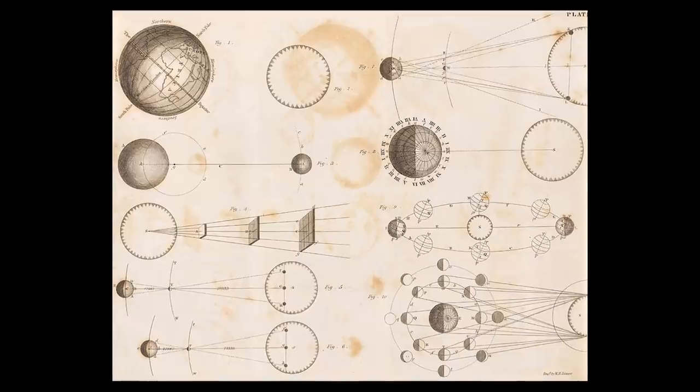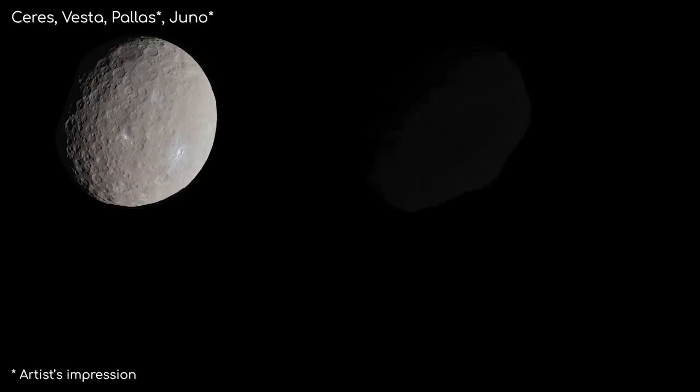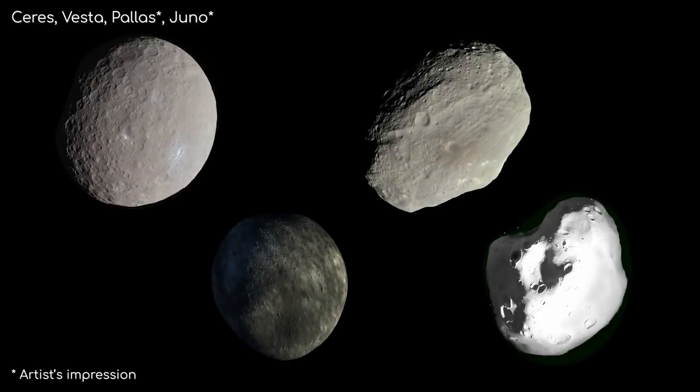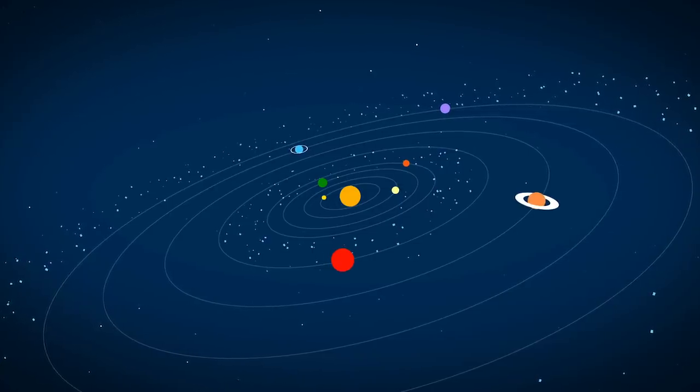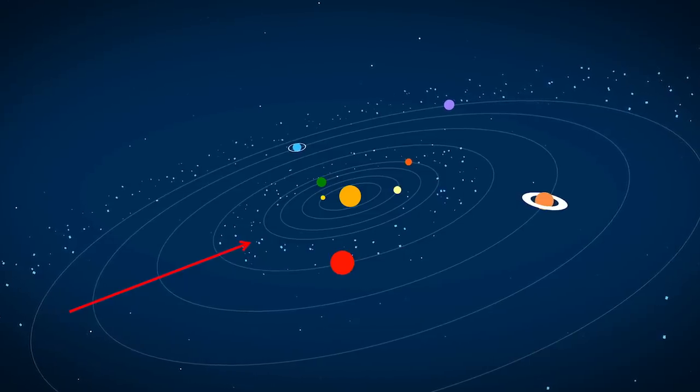After this discovery, more and more planet candidates were being found, like Ceres, Vesta, Pallas and Juno, which are all found in what we now know as the Asteroid Belt, or the large belt of asteroids between the orbit of Mars and Jupiter.